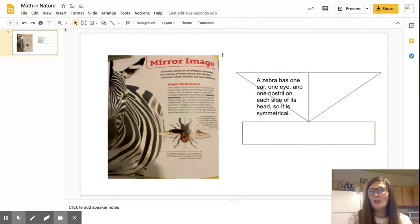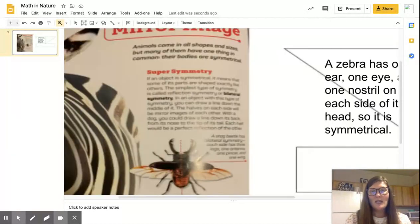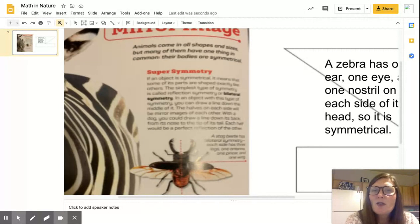For this side, I'm going to go and read this text. I'm going to find anything that's related to this and put it in here. So I got to zoom in again because I can't read it from here. So it says if an object is symmetrical, it means that some of its parts are shaped exactly like the others. Not sure that's related yet. The simplest type of symmetry is called reflection symmetry or bilateral symmetry. All right, I'm still not sure. An object with this kind of symmetry, you can draw a line down the middle of it.